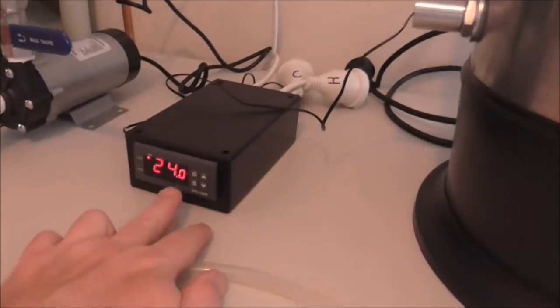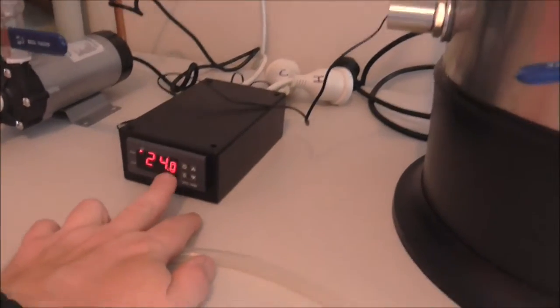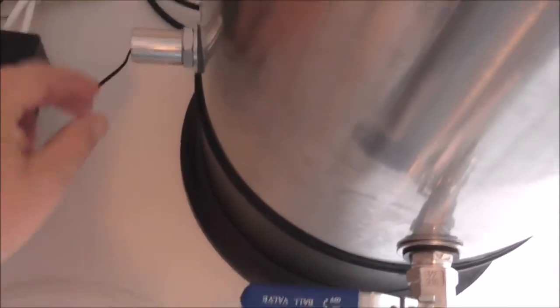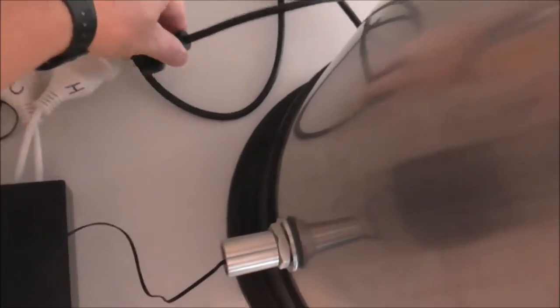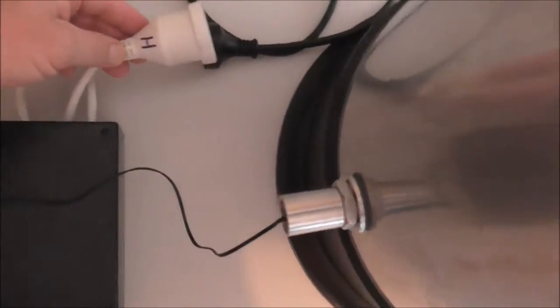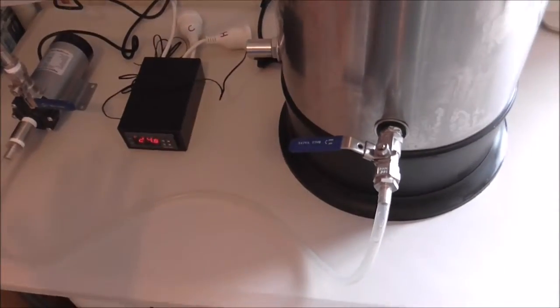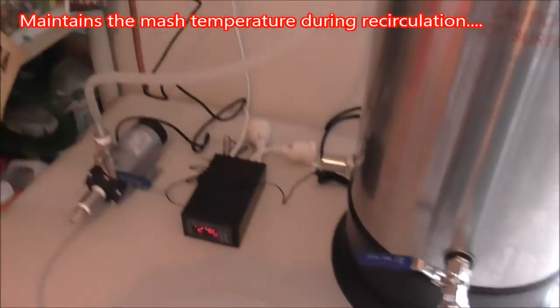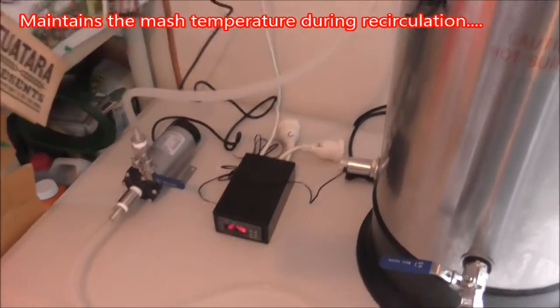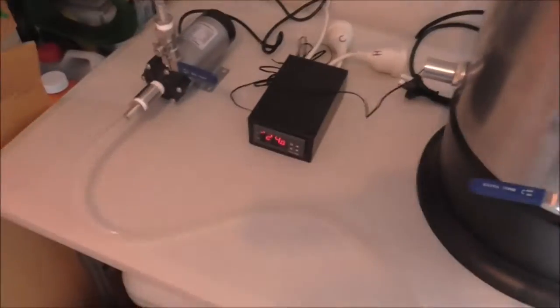I probably forgot to mention, and you've probably seen it already, but this is the STC controller. The temperature probe goes into the thermal well and then the boiler plugs into the heat side of the STC. So basically that turns the boiler on and off to maintain the correct temperature.